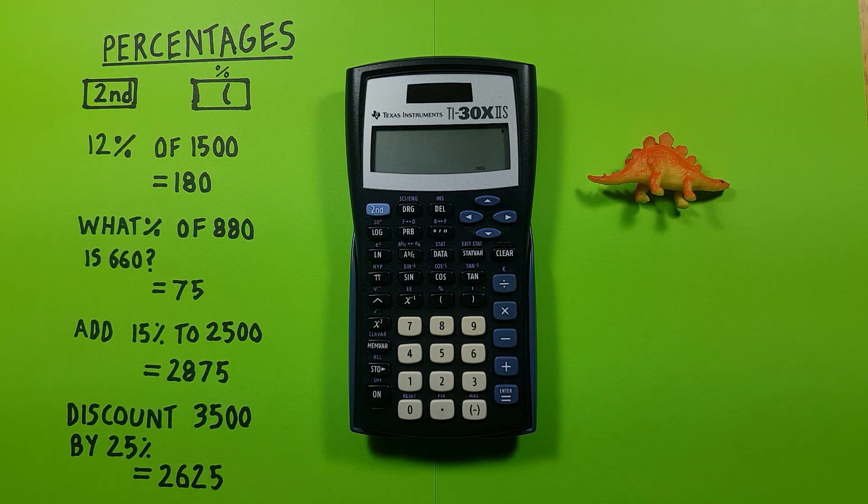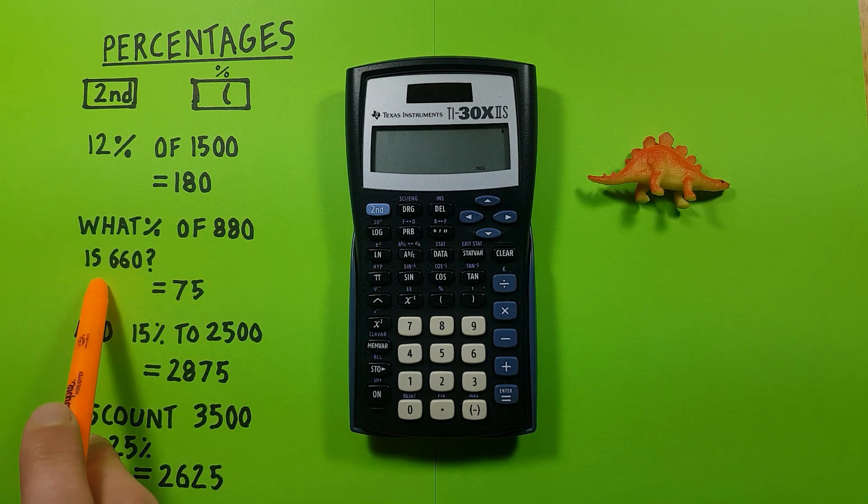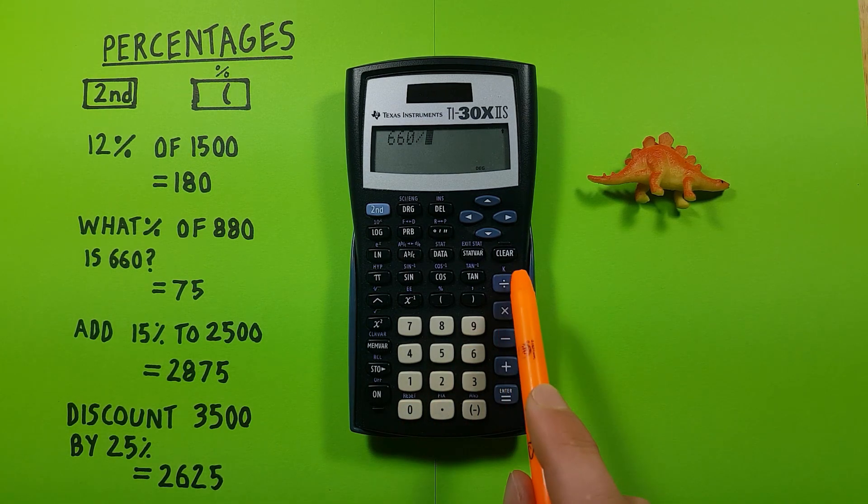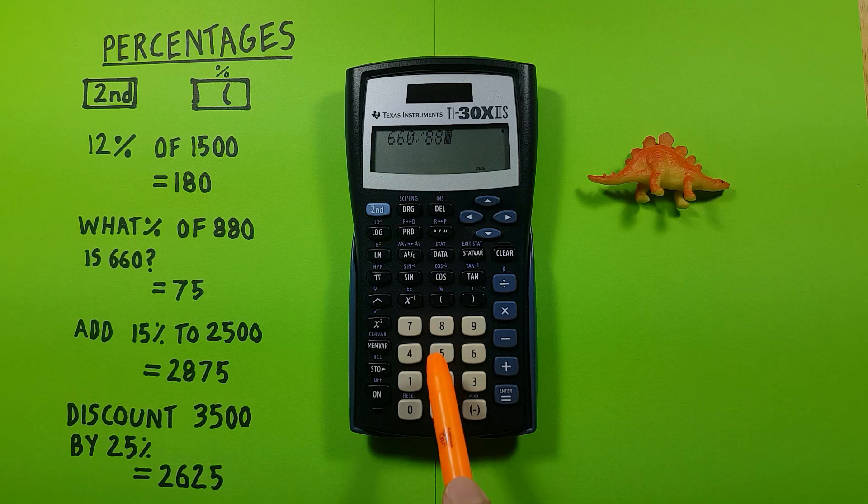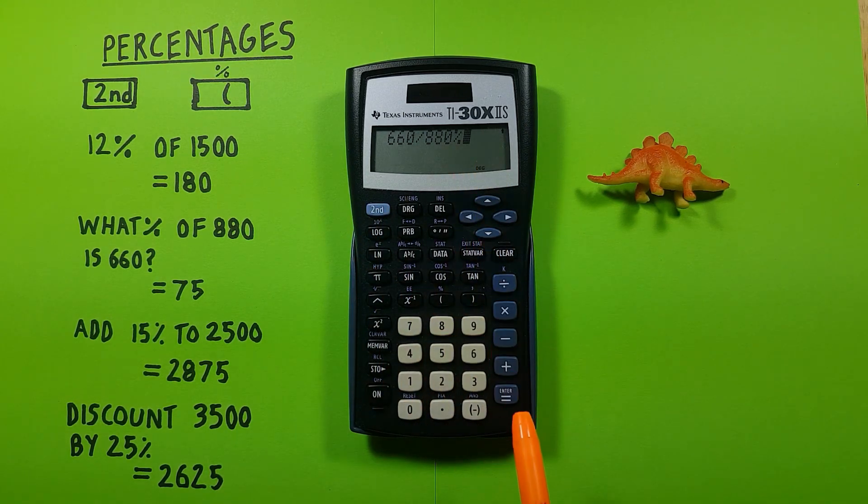We can also determine how much of a percentage of 880 is 660. To do this we start by entering 660, and then divided by 880, second function bracket for our percentage, and then press equals. We see that 660 is 75% of 880.